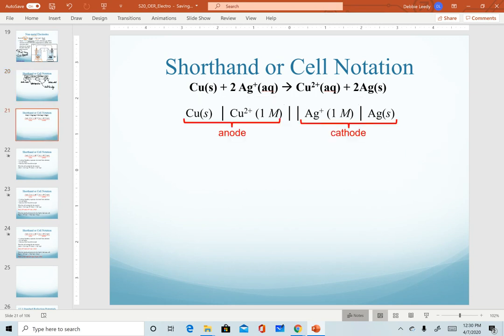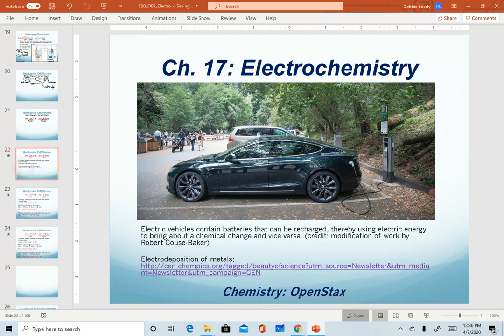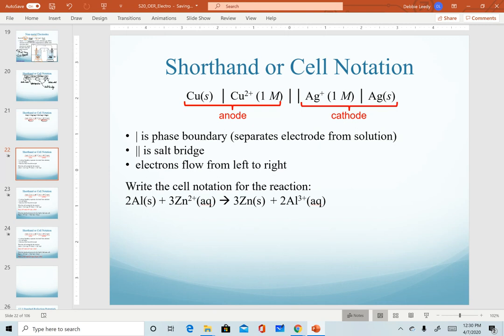So in the next few slides, the slides that you have here is our setup. Again, the left side is always the anode. The right side is always the cathode. And then these three statements summarize what I've already described. A single line is a phase boundary, double vertical line is the salt bridge, and we show the electrons flowing from left to right.